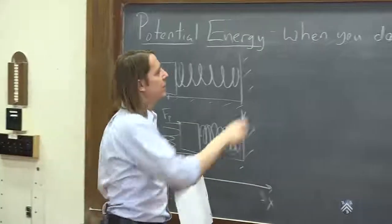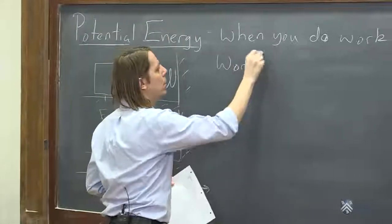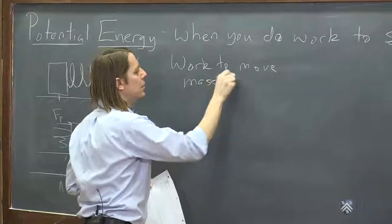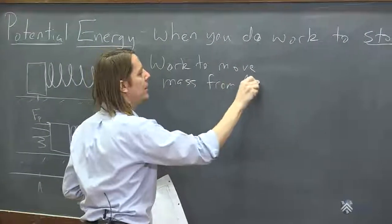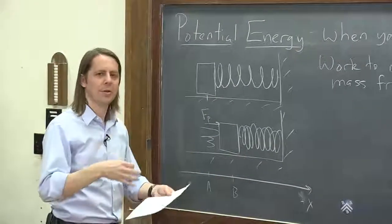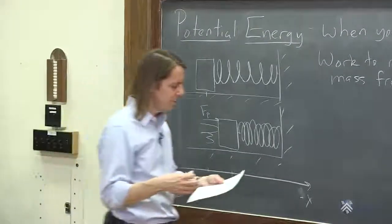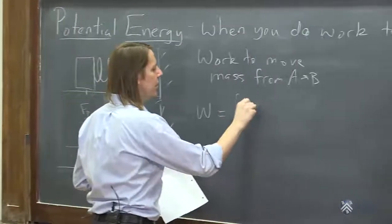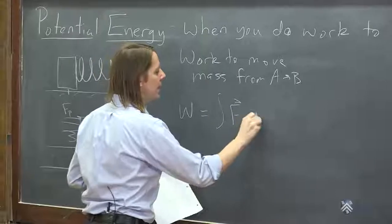The work to move the mass from A to B is what we need to calculate, because we always do a work calculation to figure out potential energy. That would be the work equals the integral of F dot dx, in this case.